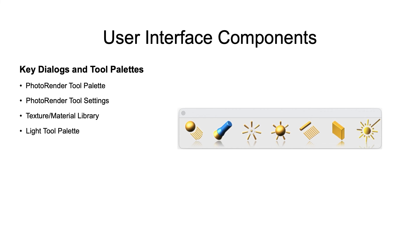The last item is the light tool palette, which provides tools to create discrete light sources in your model, potentially augmenting any environment lighting you may have. Direct light sources include distance, flood, point, sphere, line or strip lighting, area lights, and lastly laser.